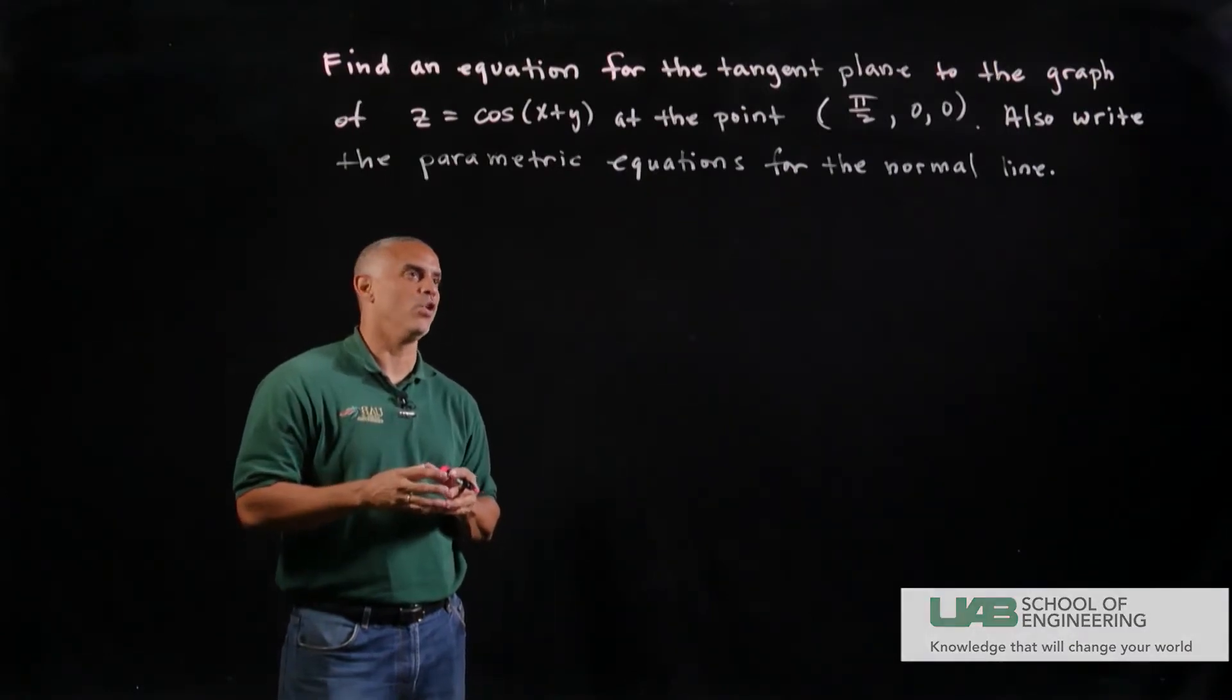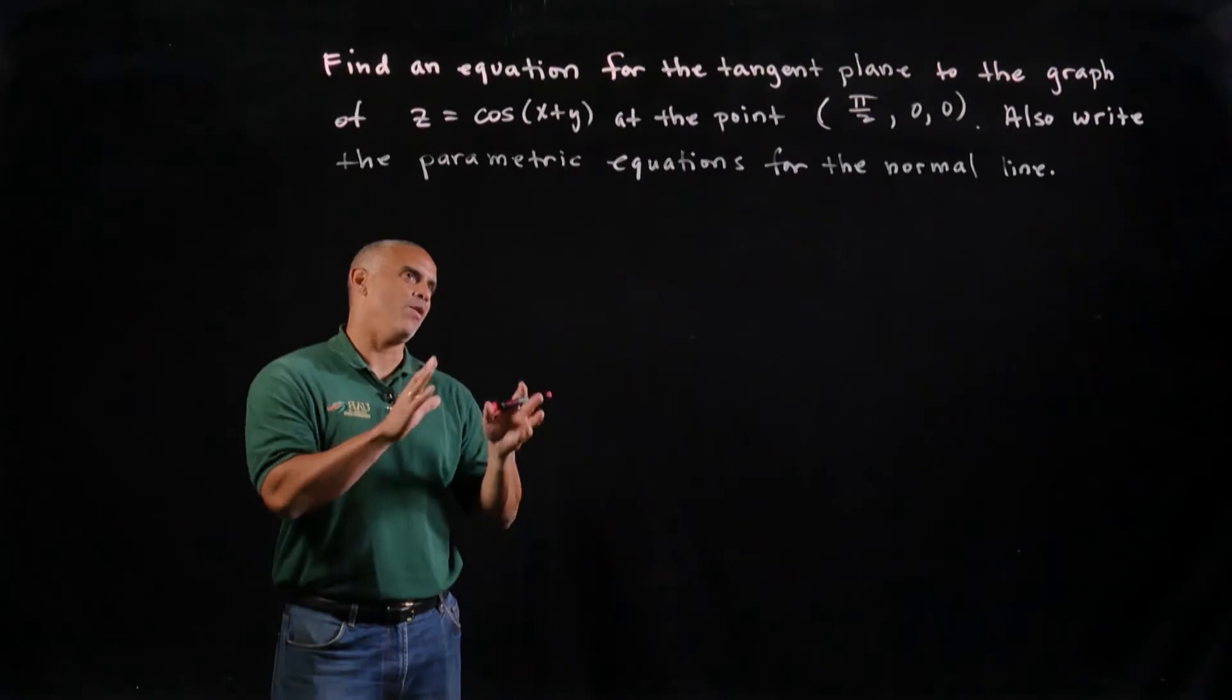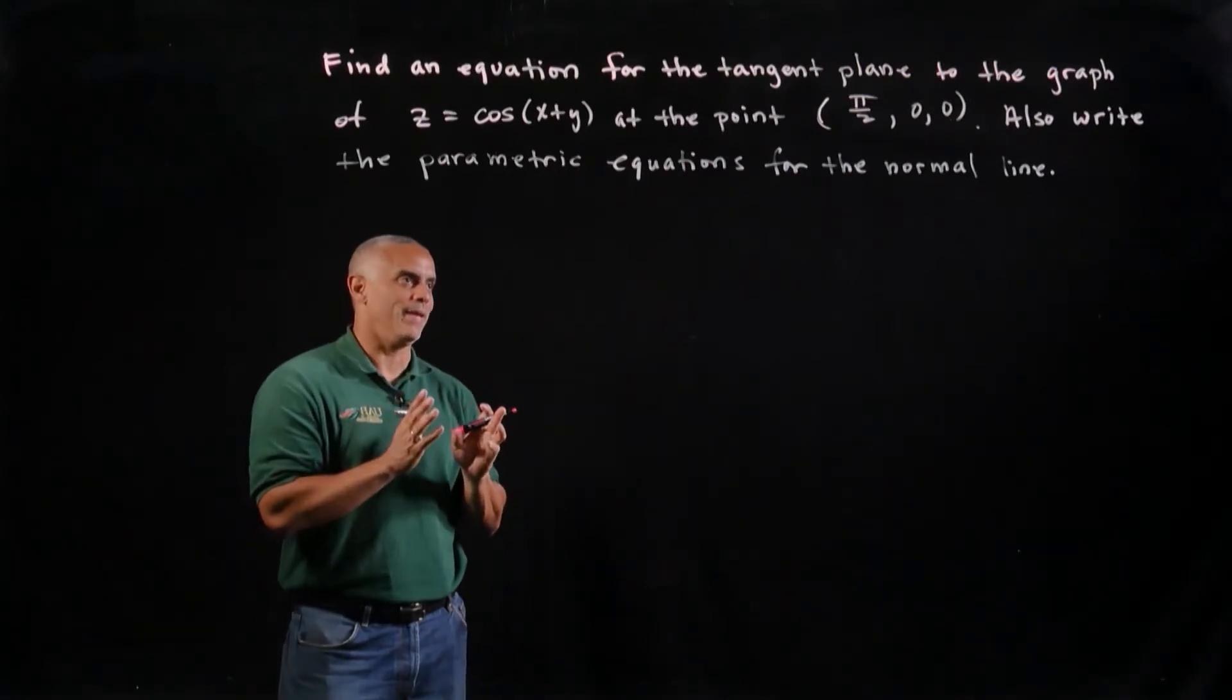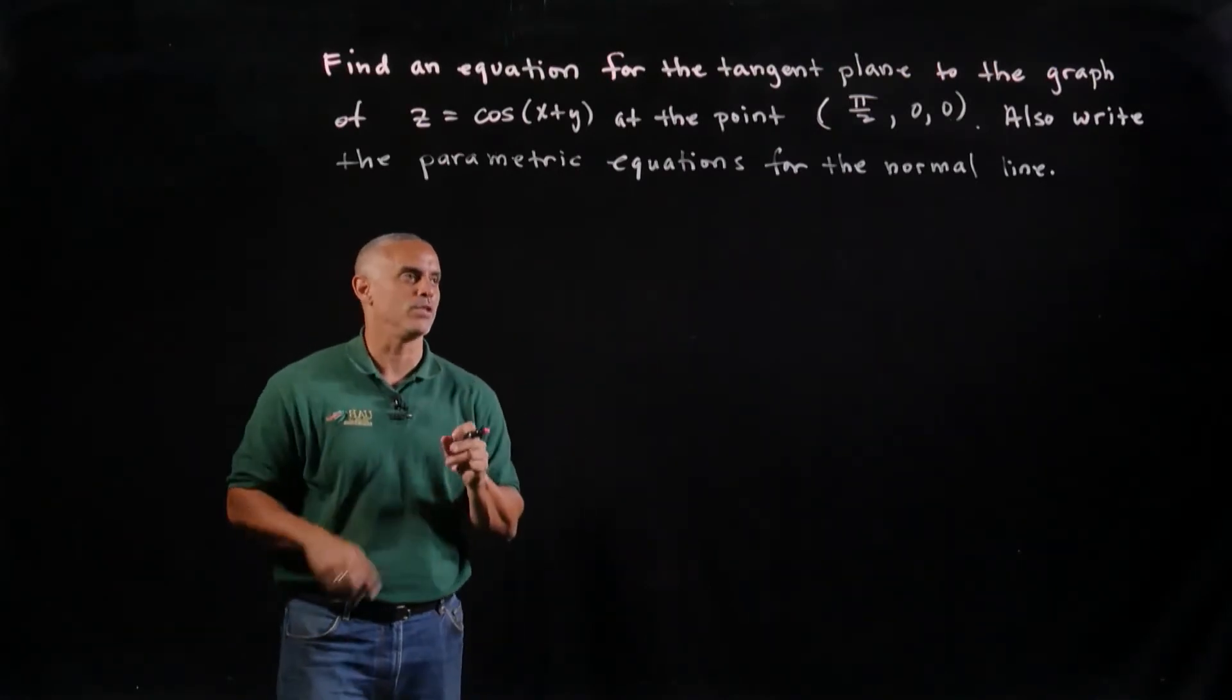And then we'll write the parametric equations for the normal line. And we'll find that once we find everything that we need for the tangent plane, it's just simple to write the parametric equations for the normal line.